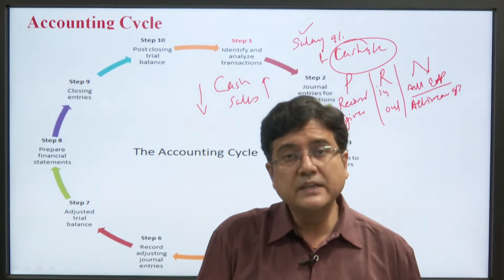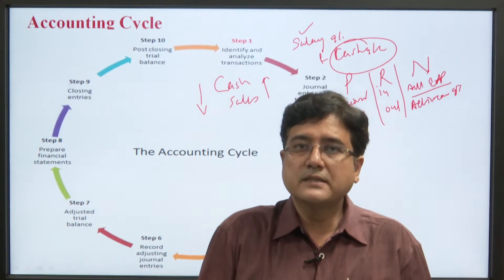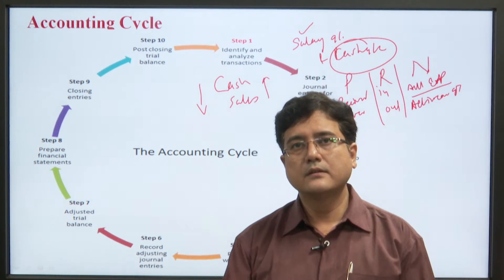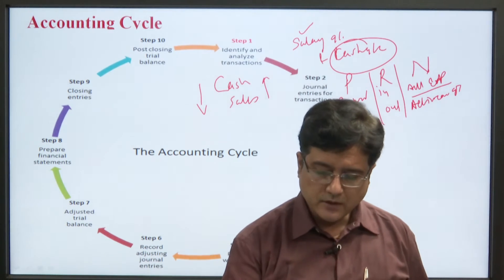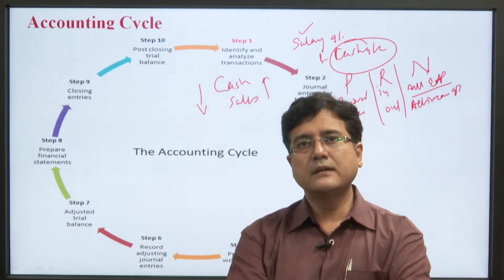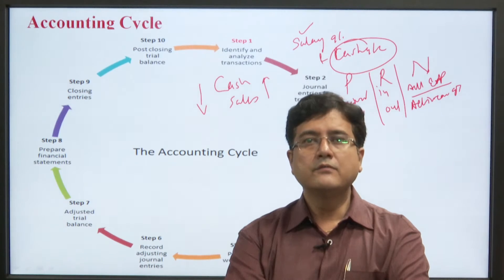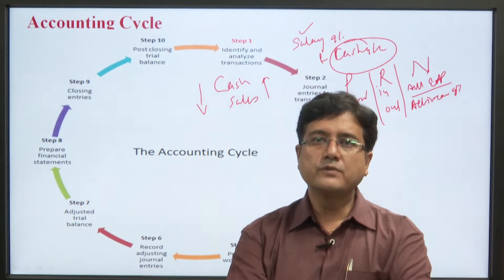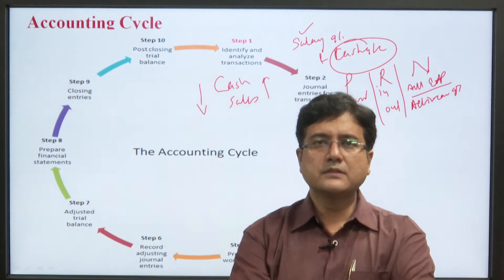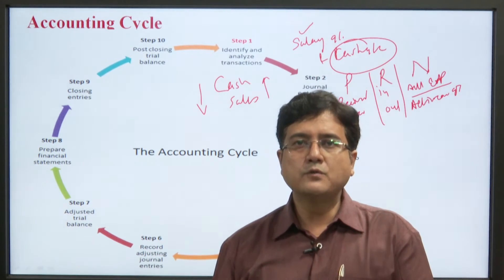The next step is to post the journal entry to the ledger. The ledger accounts contain all individual account transactions posted from the journal entry. If there are 10, 20, or 30 transactions in the journal entries for cash, we post them to the ledger account. So if we want to know the cash position of the company, we do not need to go through each journal entry one by one — it is better to find it from the ledger, since there are many daily transactions that are difficult to locate through journal entries alone.